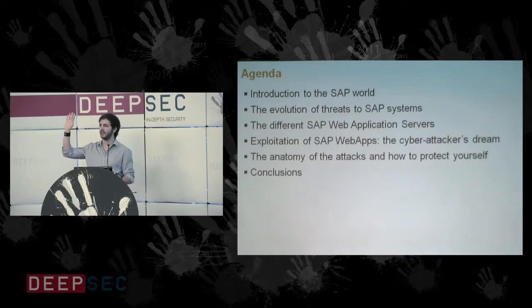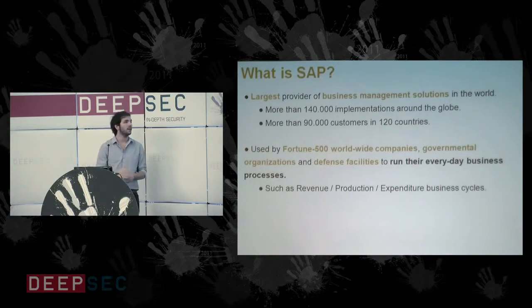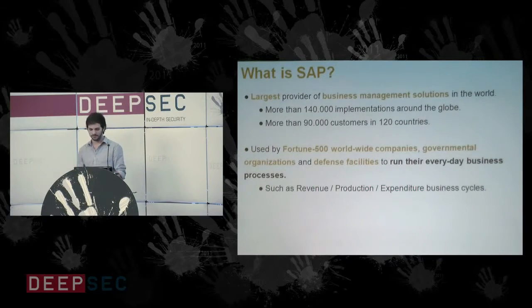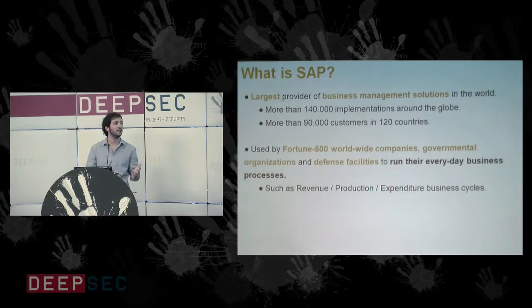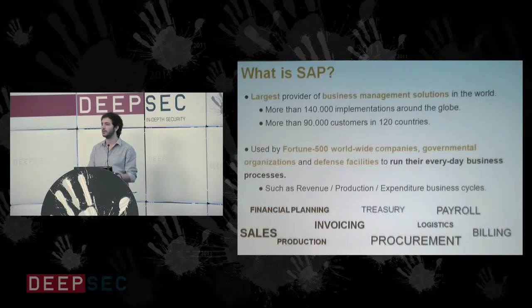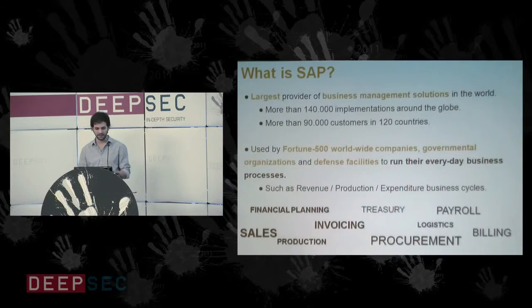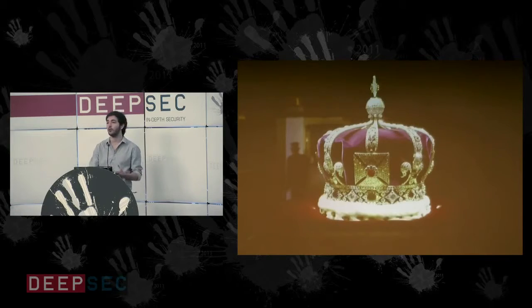How many of you use SAP in your company? Pretty much everyone. For those who haven't — SAP is the largest provider of business management solutions in the world. There are more than 140,000 SAP implementations globally and over 90,000 customers. We're talking about Fortune 500 companies, governmental entities, and military organizations. They use these systems to run the most critical business processes: financial planning, invoicing, selling, procurement, payroll. Everything that is the most important information of the company runs through these systems — that's why we call them the crown jewels.